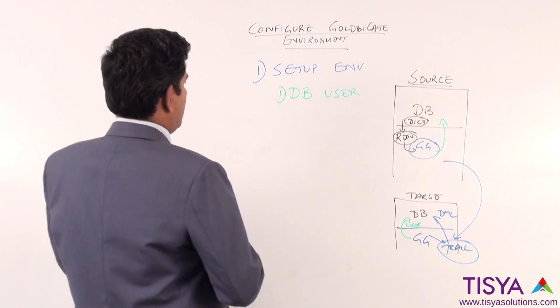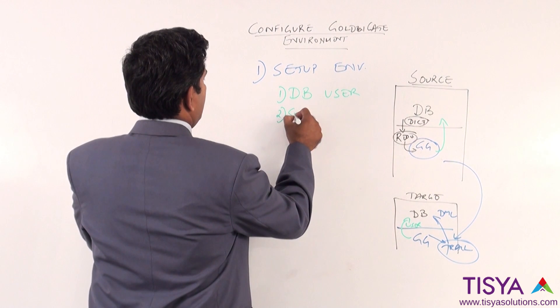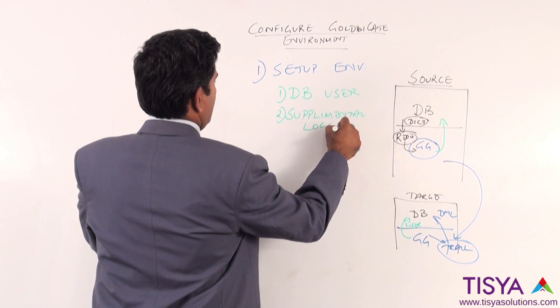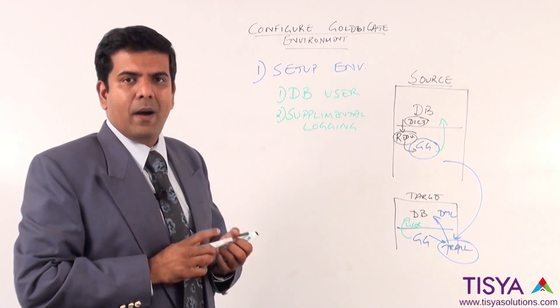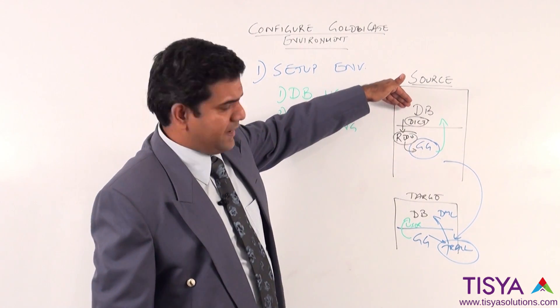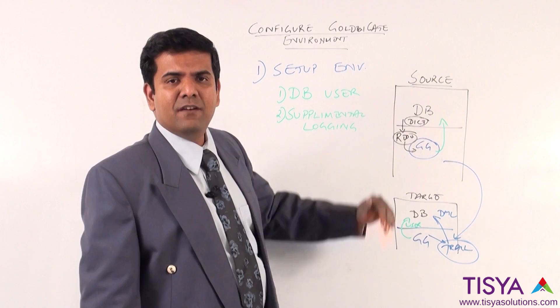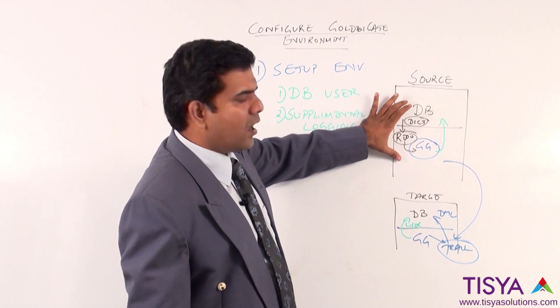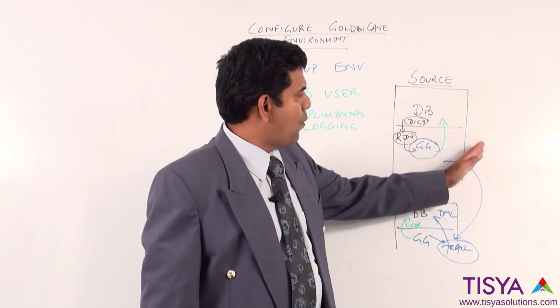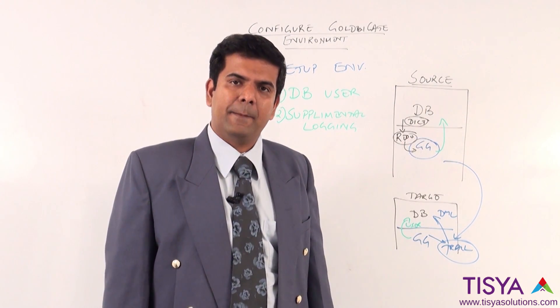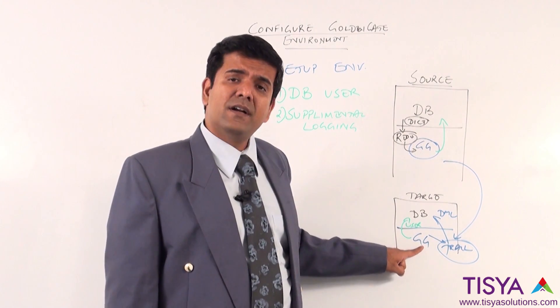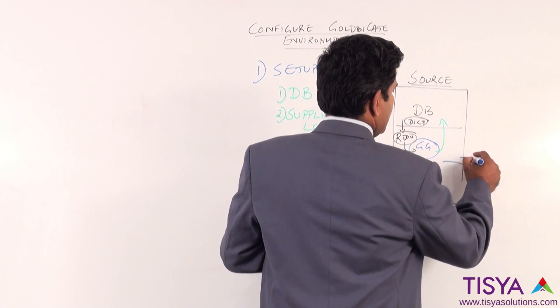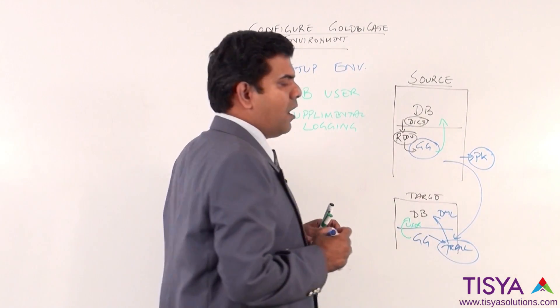The next step is to configure supplemental logging. By default, whenever the database is writing to the redo logs, it just keeps capturing information about the row ID that got modified and the changed value. As far as the redo log file is concerned, it is sufficient because when it is doing the recovery, it will have the row ID information from which it can apply. But when the same data has to be replicated into a different database, it needs the exact information about the primary key of a column.